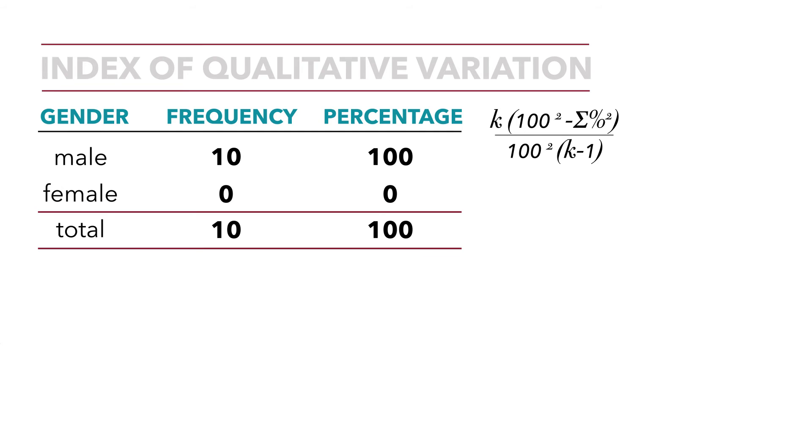Let's calculate the index of qualitative variation for our two scenarios. We'll start with the first one, where we have clearly no variability. We have 10 males and zero females. We have the formula k times 100 squared minus the sum of the percentages squared over 100 squared times k minus 1. In our example, we have two categories, male and female, so k equals 2. 100 squared is 10,000 minus the sum of the percentages squared. The percentage of males is 100 squared plus the percentage of females which is zero squared, over 10,000 times k minus 1. k is 2, so 2 minus 1 is 1.